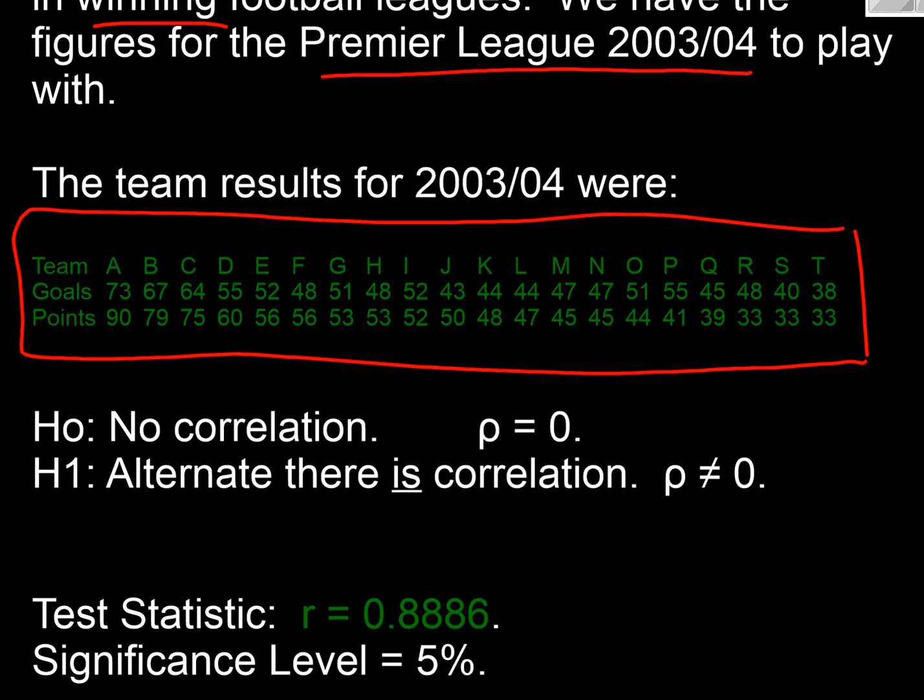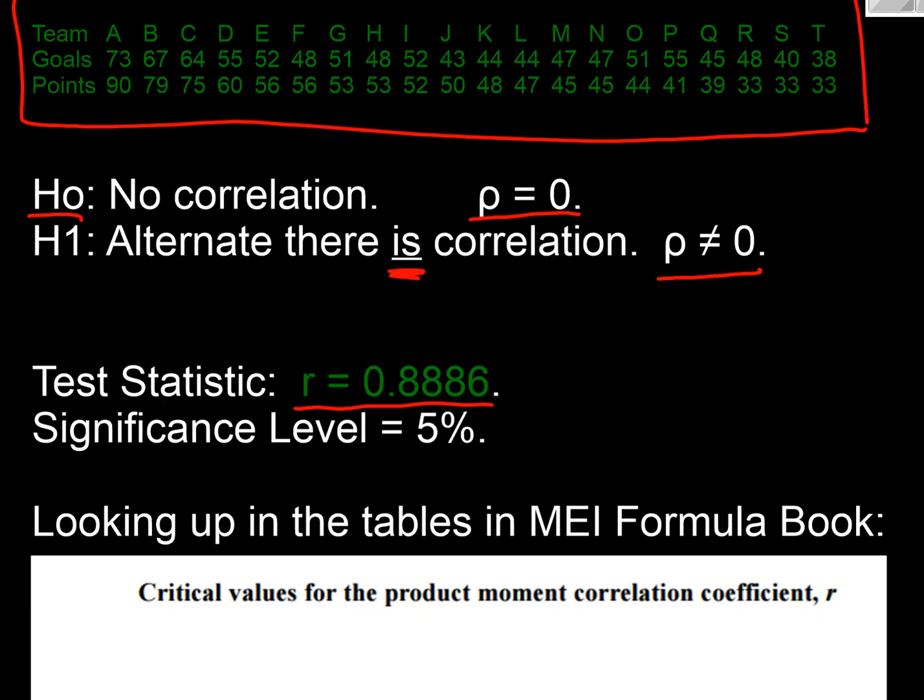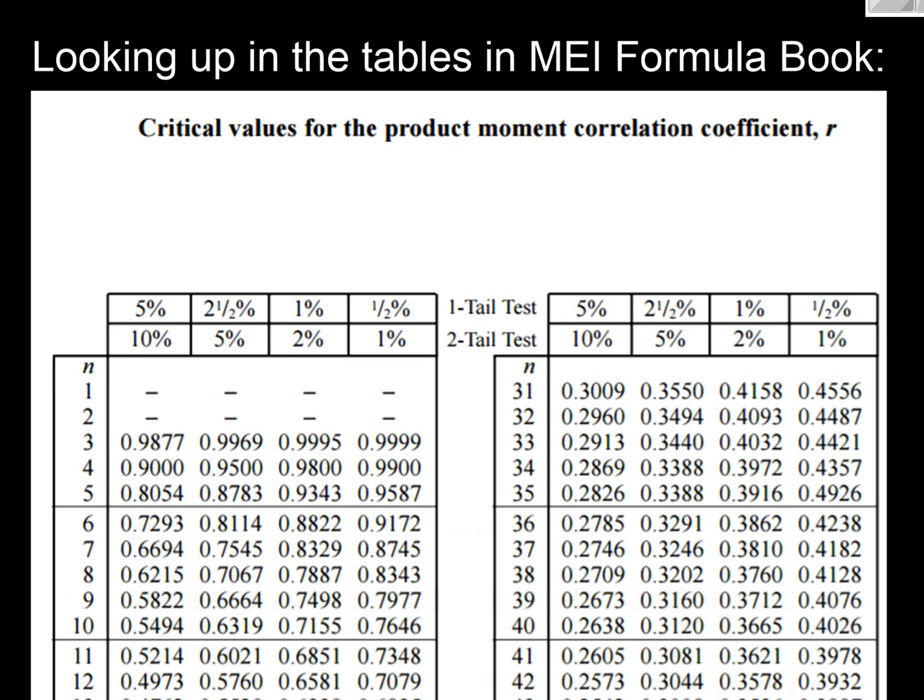So what should we do our test with them? Well, H0 has got to be no correlation, rho equals zero. So we're looking for an r around zero, aren't we? The alternate, we're just going to go with that there is correlation, whether it's positive or negative. So it's just rho does not equal. That means we've got a two-tail test, doesn't it? Well, our test statistic is going to be our r value and we get that straight out of our calculator, having plugged that data in, and we get 0.8886. Let's apply a significance level of 5% on our two-tailed test.